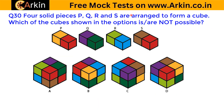Four solid pieces P, Q, R, and S are arranged to form a cube. Which of the cubes shown in the options is/are NOT possible? So instead of finding which are possible, we have to find which are not possible. Here, if we see this green and this blue is this piece, this red and brown is this one, this green and purple is this one, and this red should be with this orange — so this is possible, meaning this option will not be correct. Here we can clearly see there are two blues visible, but in the pieces P, Q, R, and S there is only one blue — so this is not possible and would be one of the correct answers.